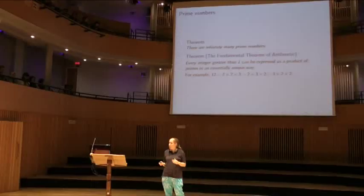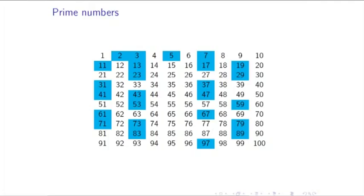Uniqueness of prime factorization turns out to be really important — there are all sorts of things that are true because of it; if prime factorization weren't unique, the world would be a different place. Knowing these things about primes — that we won't run out and that they're the building blocks of everything else — I'd like to go back to these primes and think about what interesting things we might notice.